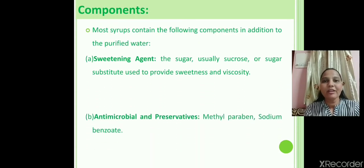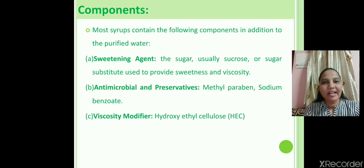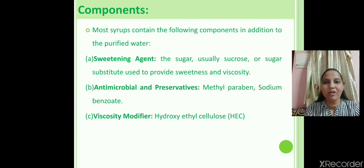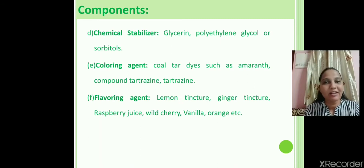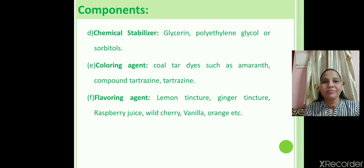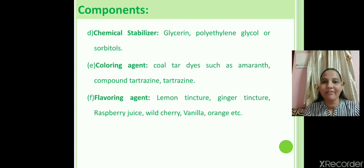The different components of syrup are: first, a sweetening agent such as sucrose or sugar; second, antimicrobial preservatives such as methyl paraben, propyl paraben, and sodium benzoate; third, a viscosity modifier such as hydroxyethyl cellulose to increase viscosity; fourth, a chemical stabilizer such as sorbitol or glycerin; fifth, a coloring agent such as coal tar dyes like amaranth and tartrazine; and sixth, a flavoring agent such as vanilla flavor, strawberry flavor, lemon tincture, or ginger tincture.